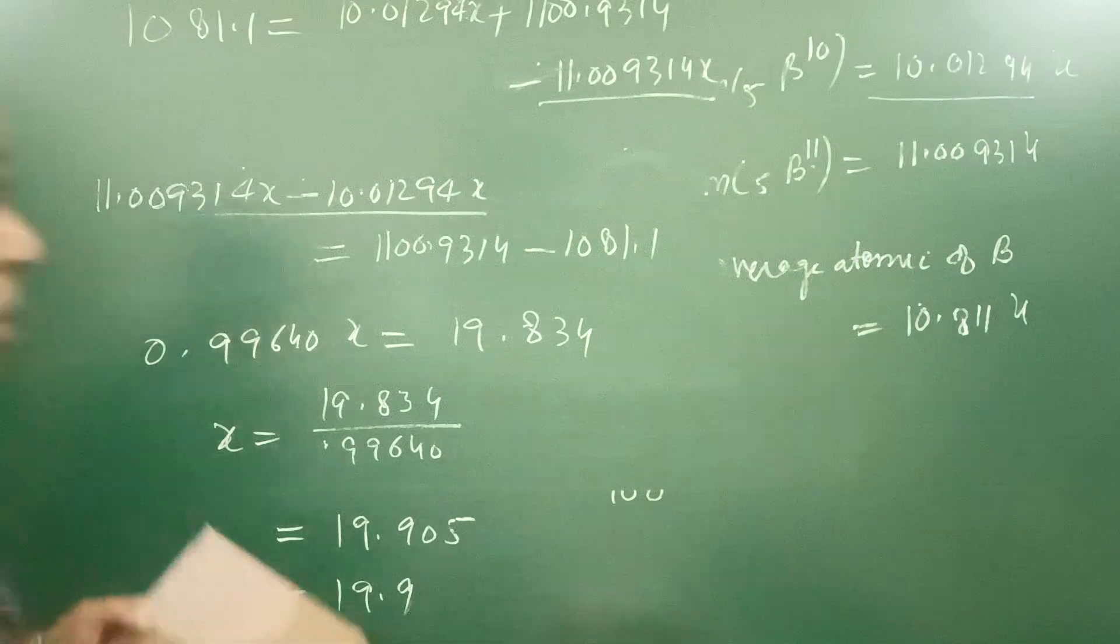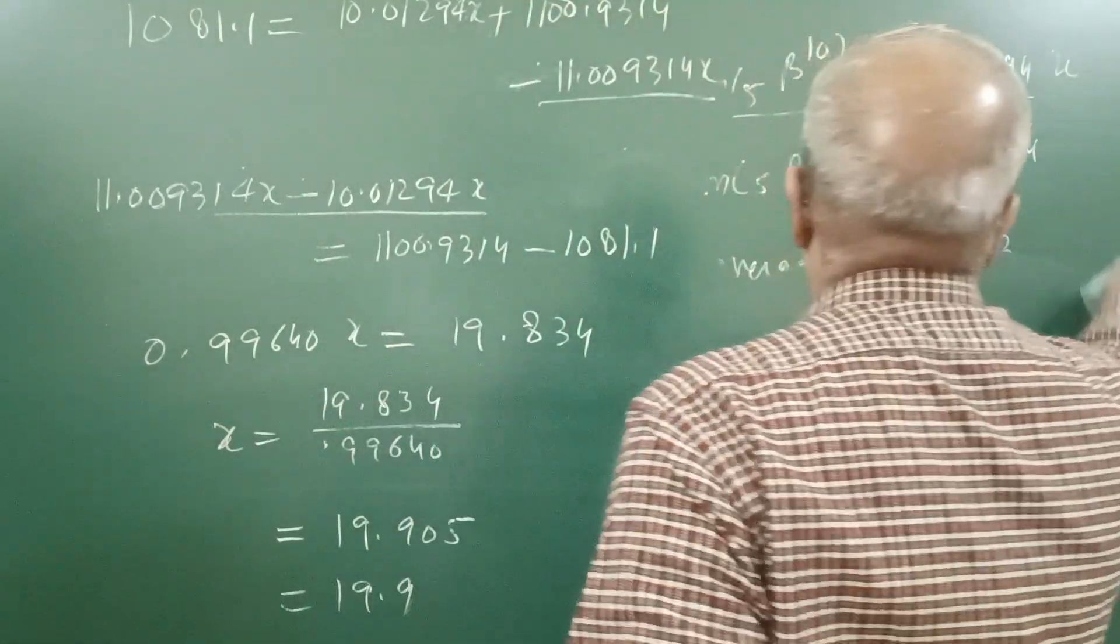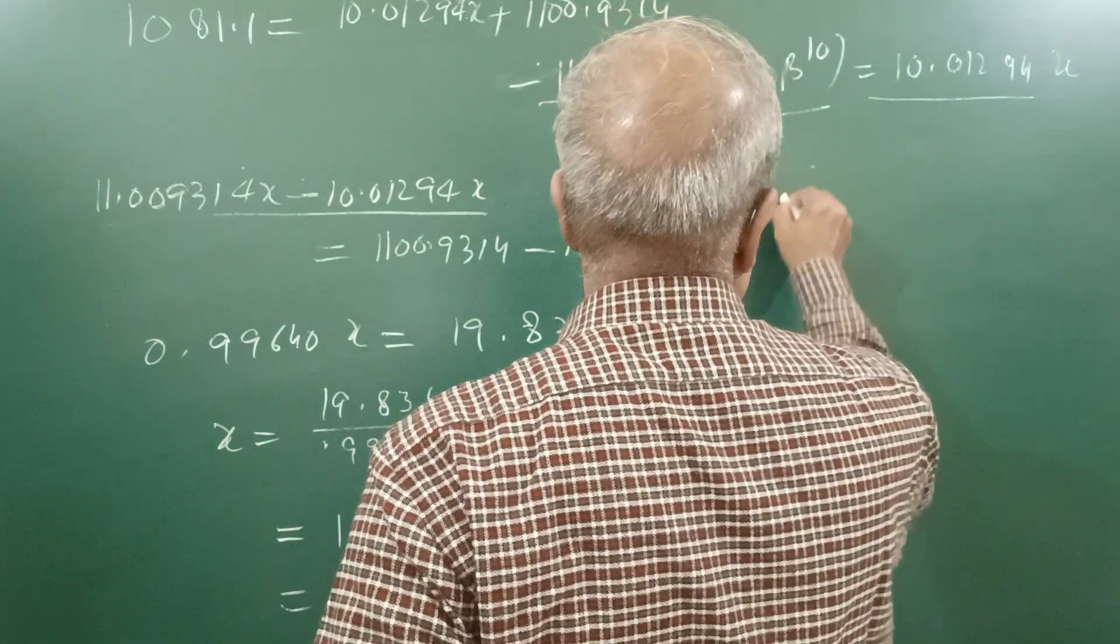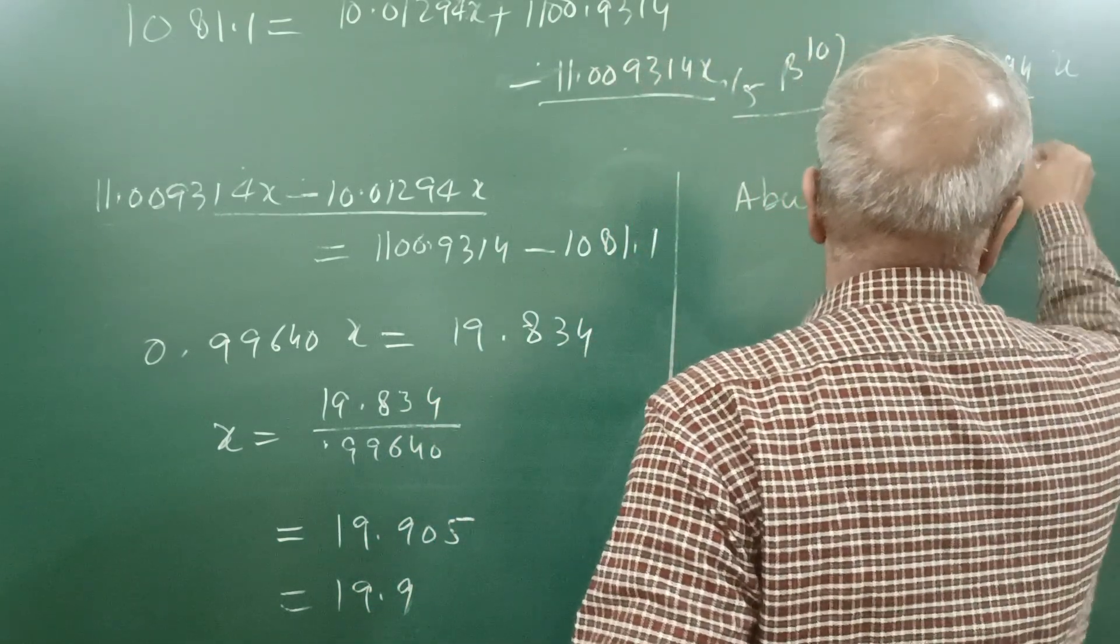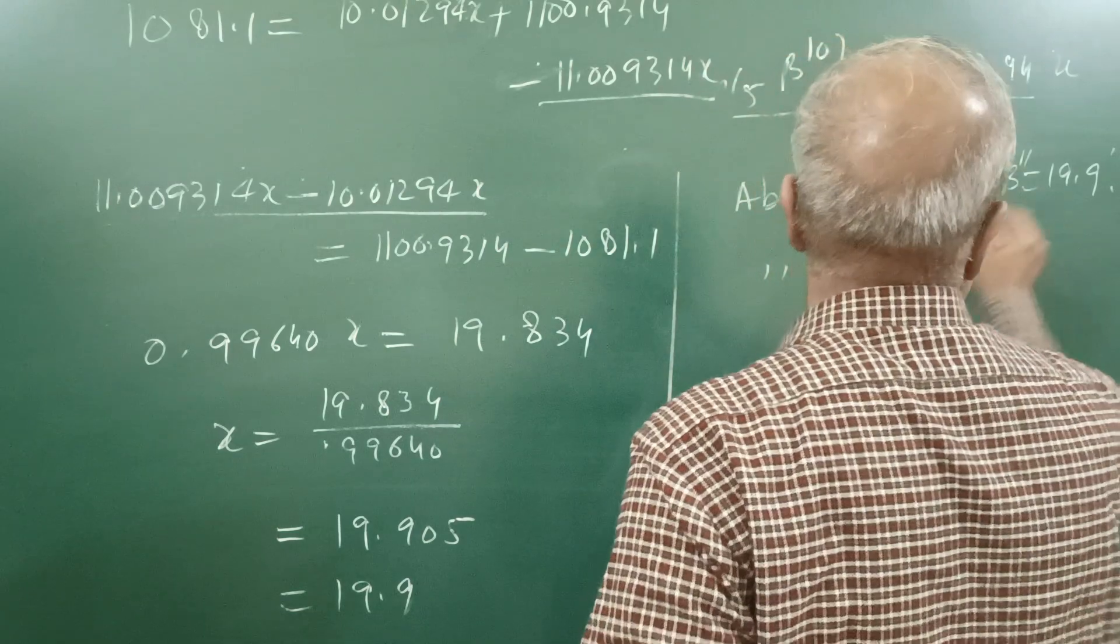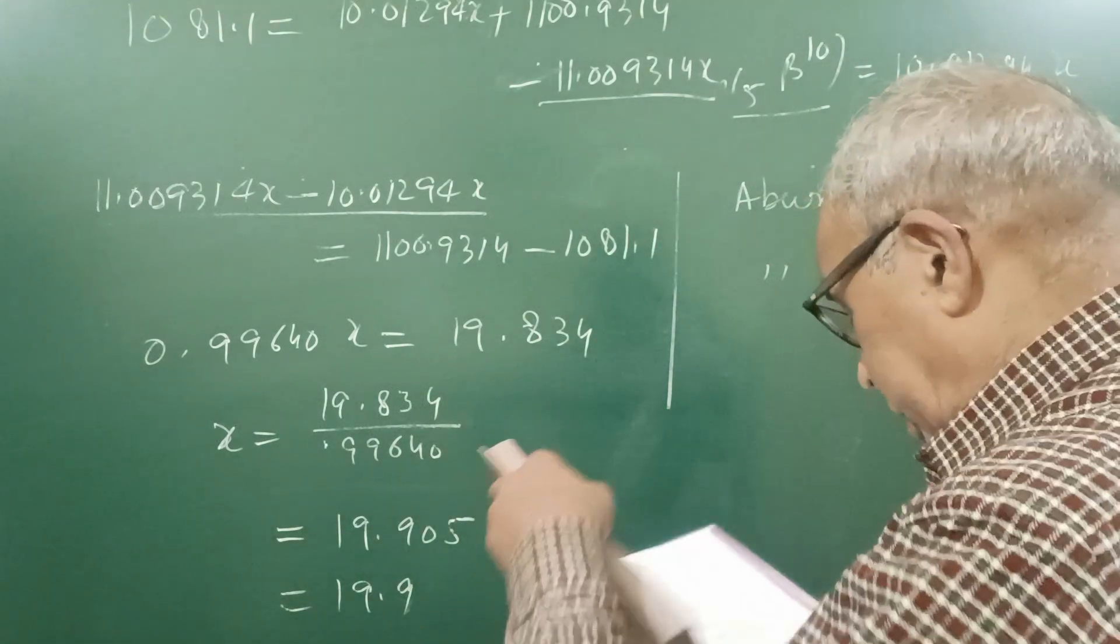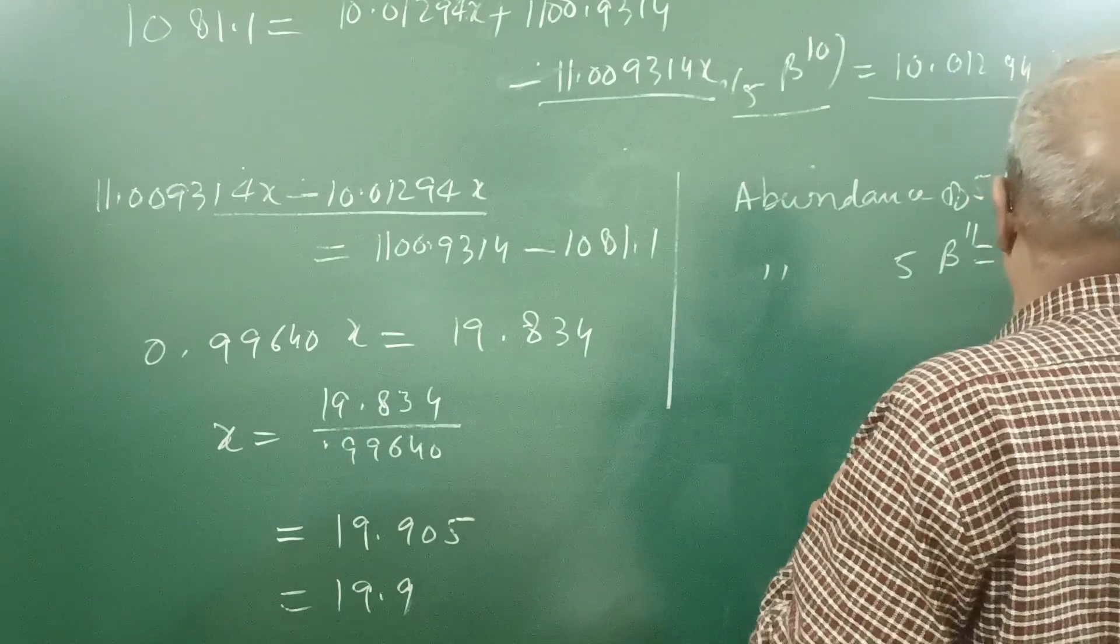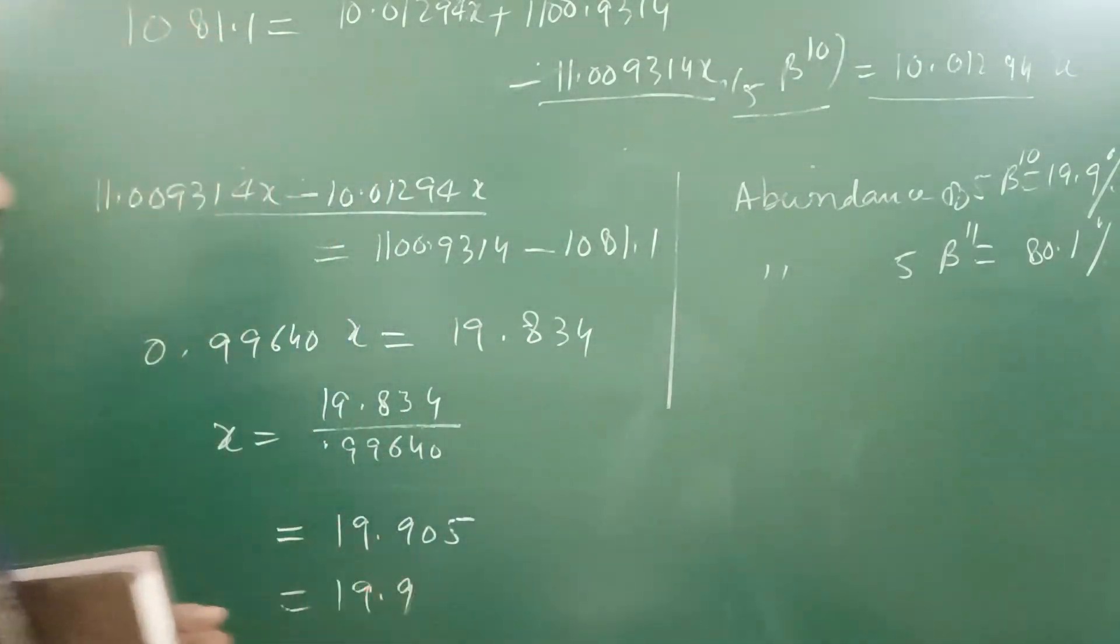On subtraction, it will come out to be 0.99640x equal to 19.834. So x equal to 19.834 upon 0.99640 and it comes out to be 19.9 after dividing. So out of 100, the number of atoms of 5B10 is 19.9 and abundance of 5B10 is 19.9% and abundance of 5B11 is 80.1%.